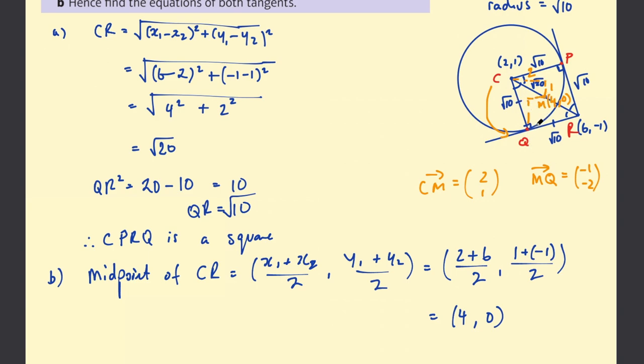So left 1 down 2 is going to give us the point Q equals 4-1 is 3 and 0-2 is -2.